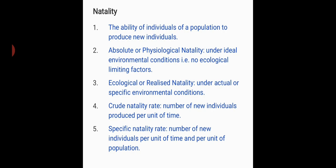Natality can also be expressed as crude natality rate and specific natality rate. Crude natality rate is simply the number of new individuals produced per unit time. For example, 400 individuals produced in a population of size 10,000 in a year.